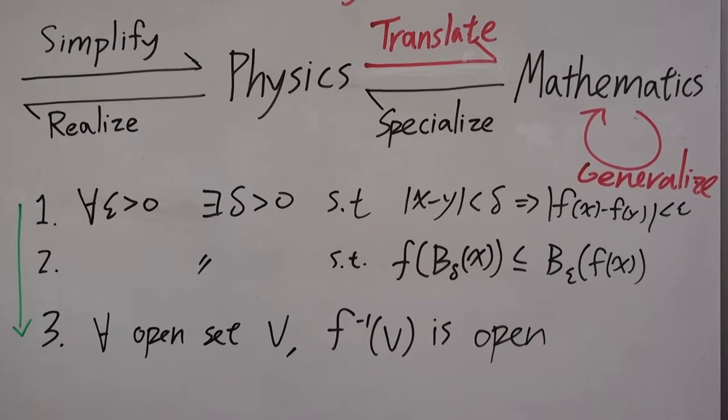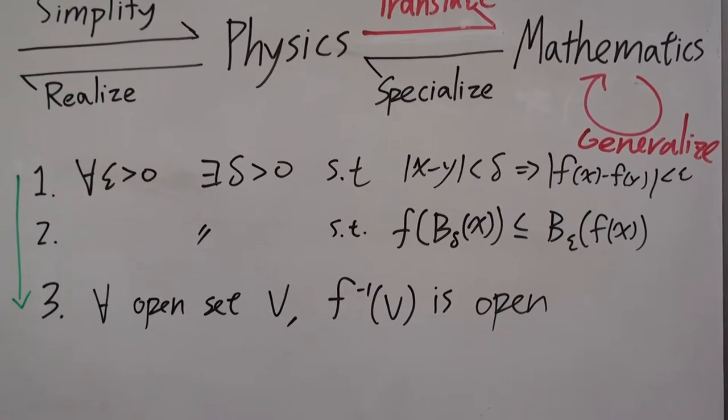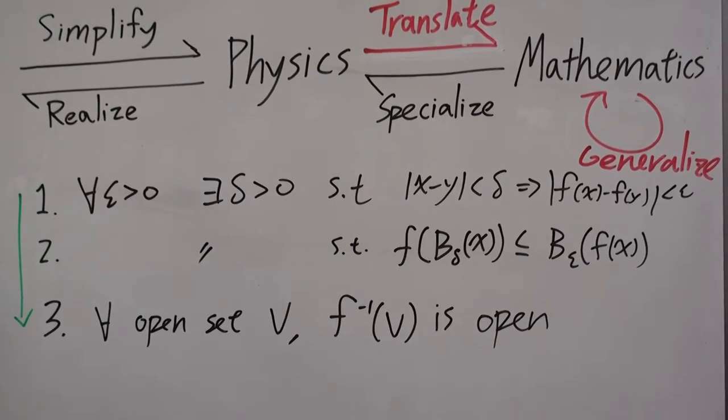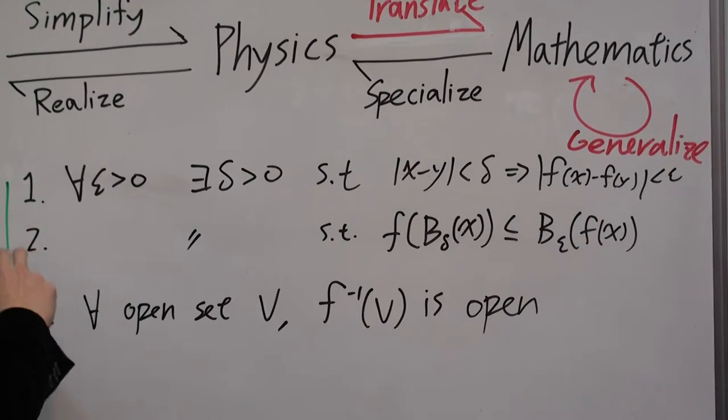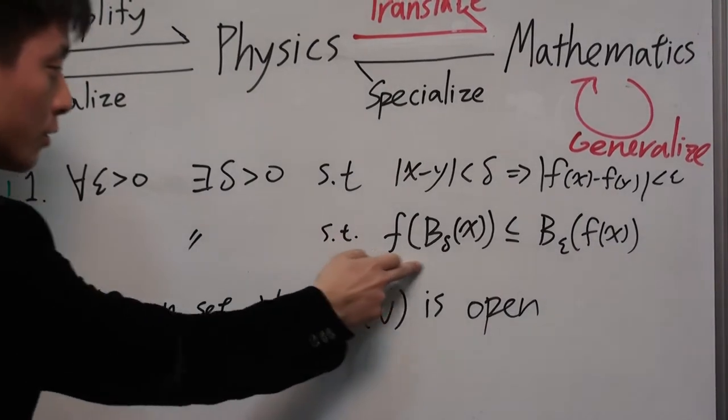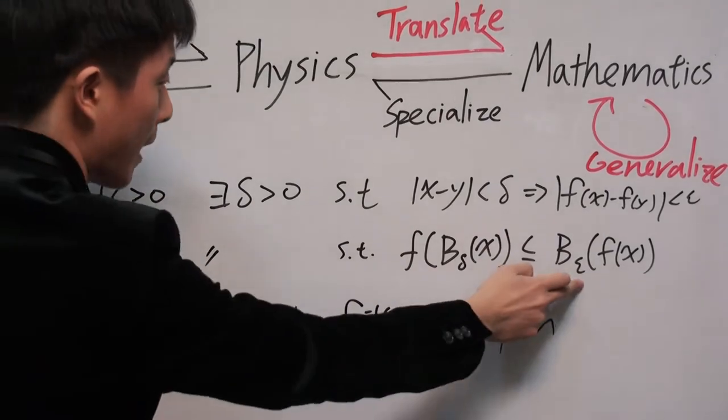So then we introduce metric space, we introduce distance, maybe we can introduce p-norm instead of the regular distance. And then we define continuity in terms of the delta ball and epsilon ball.